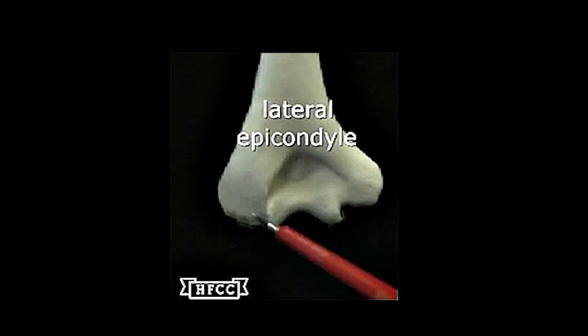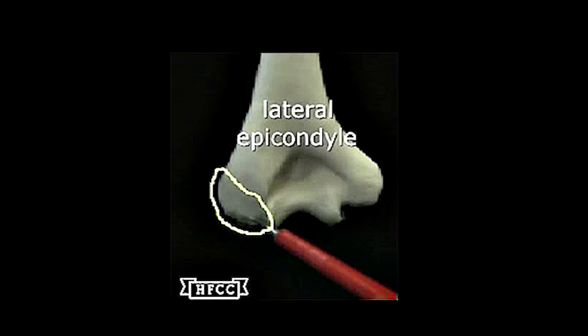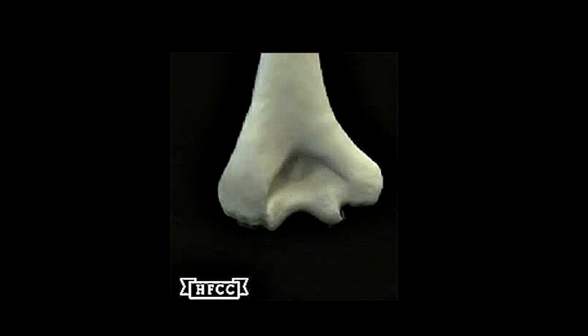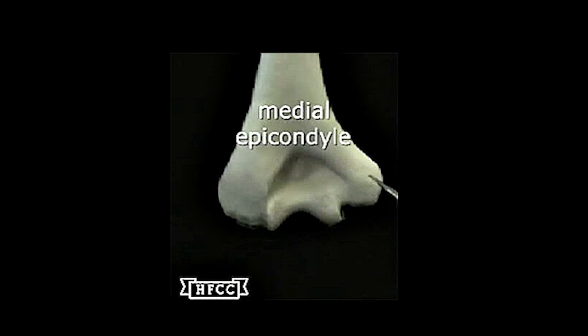And then to look at the epicondyles. Here's the lateral epicondyle here. Again, for muscle attachment, as it was on the anterior. And for the medial epicondyle also, this projection. You can feel these on yourself, by the way, at the corners of the elbow. Give it a try.